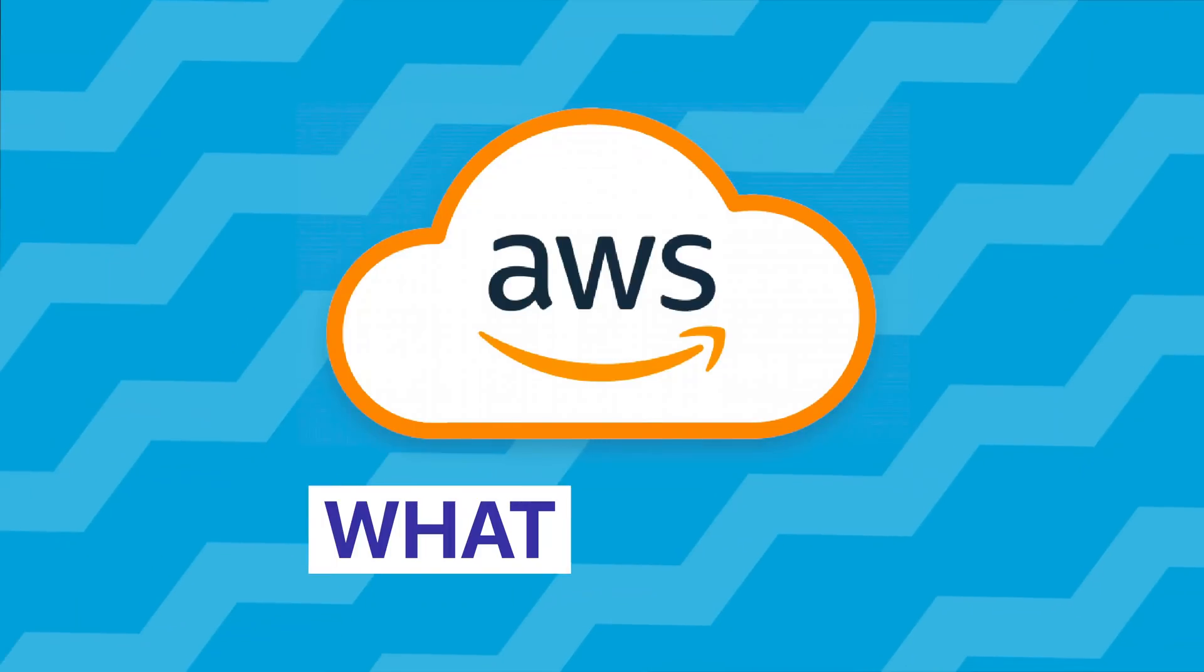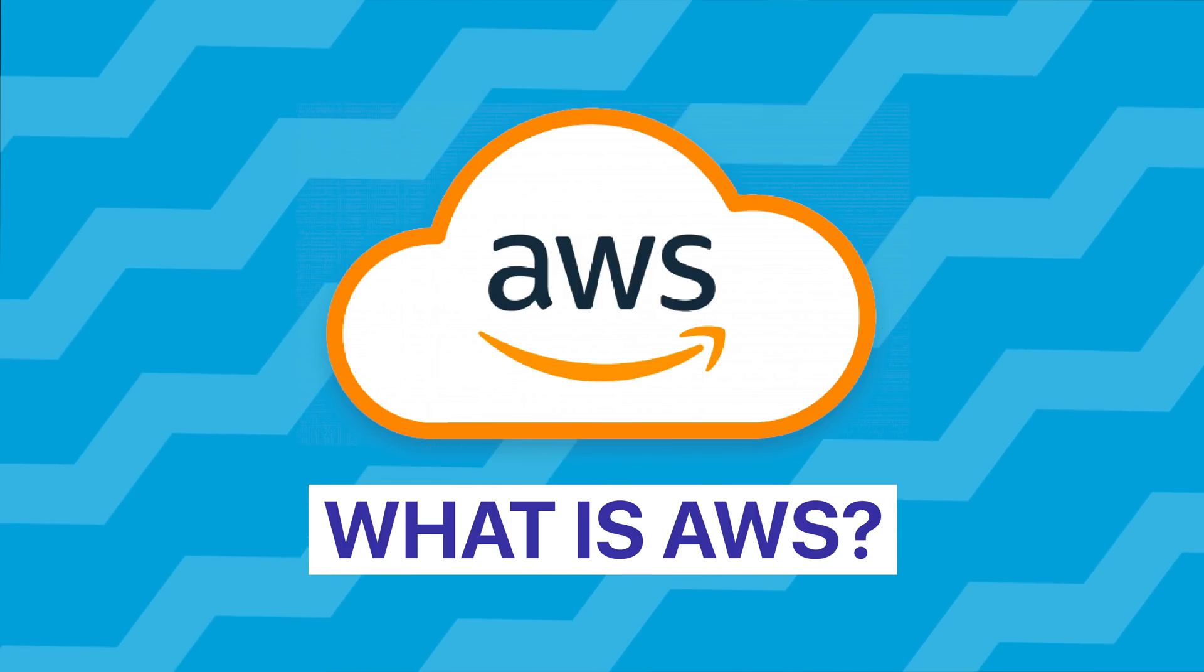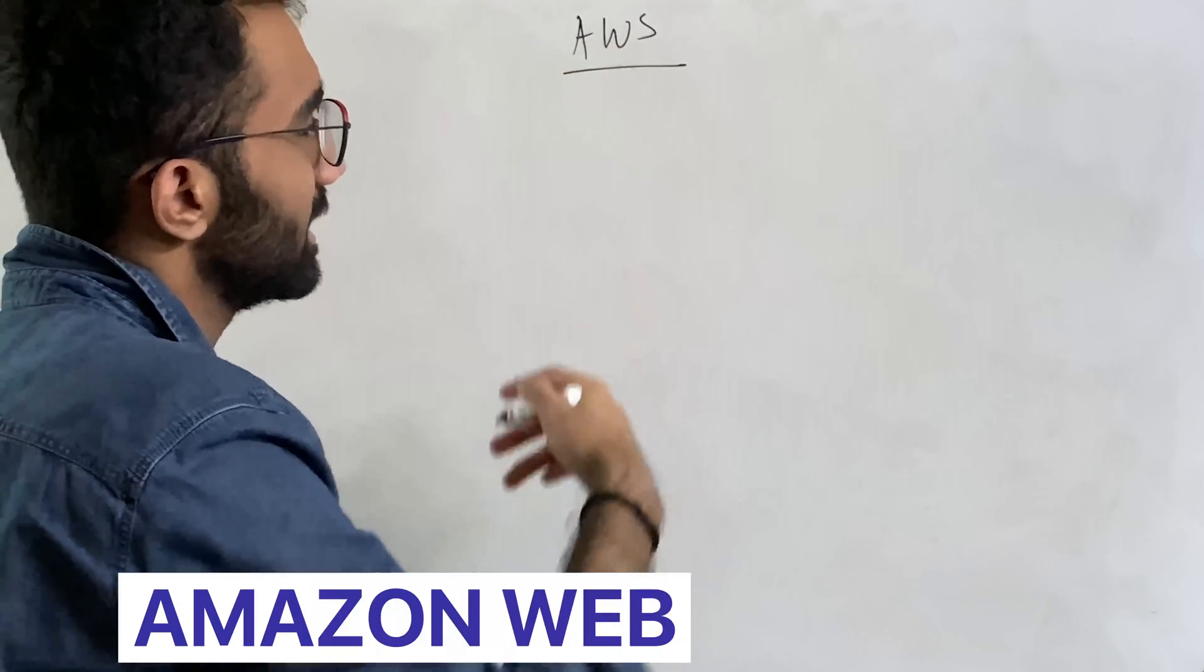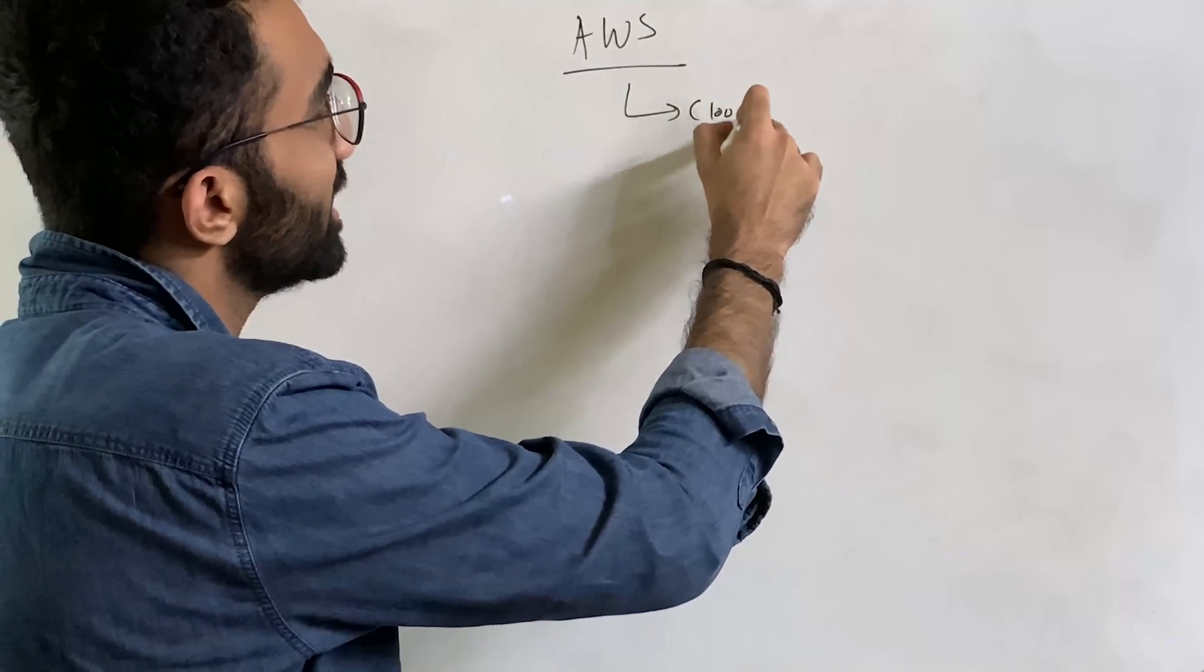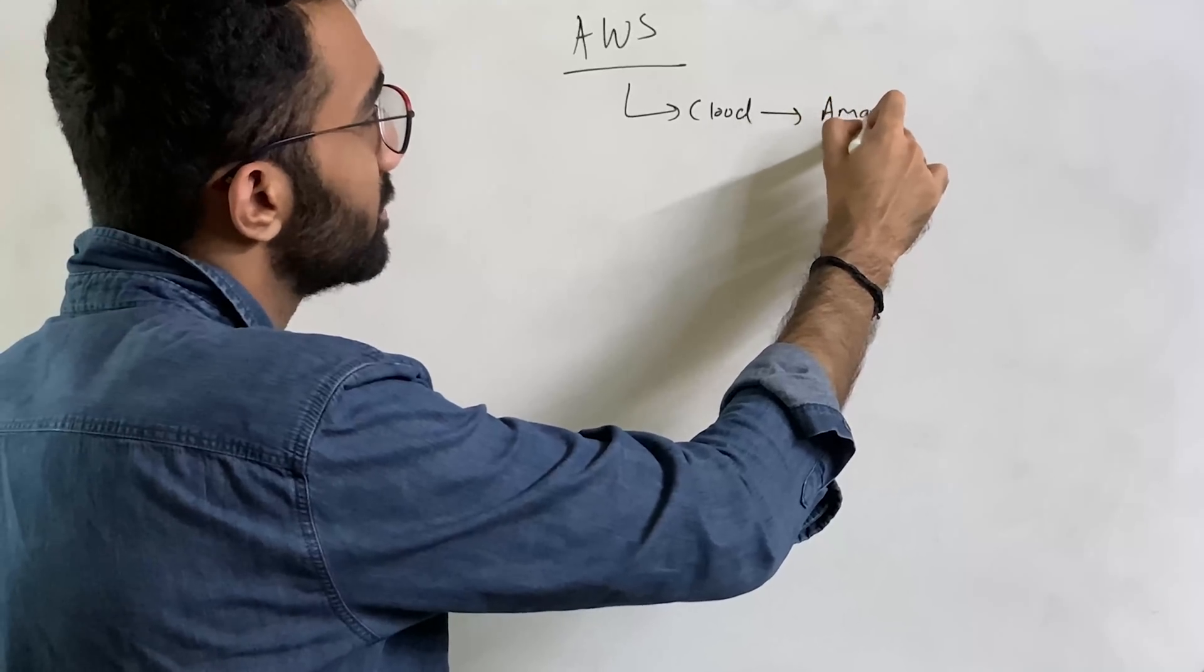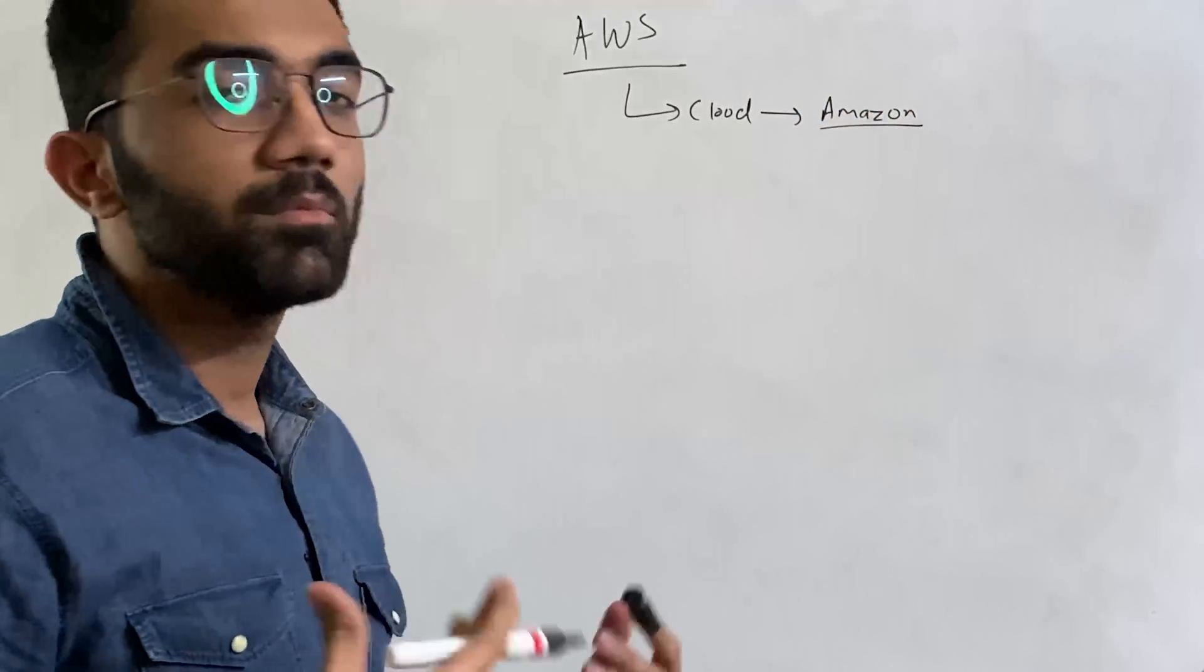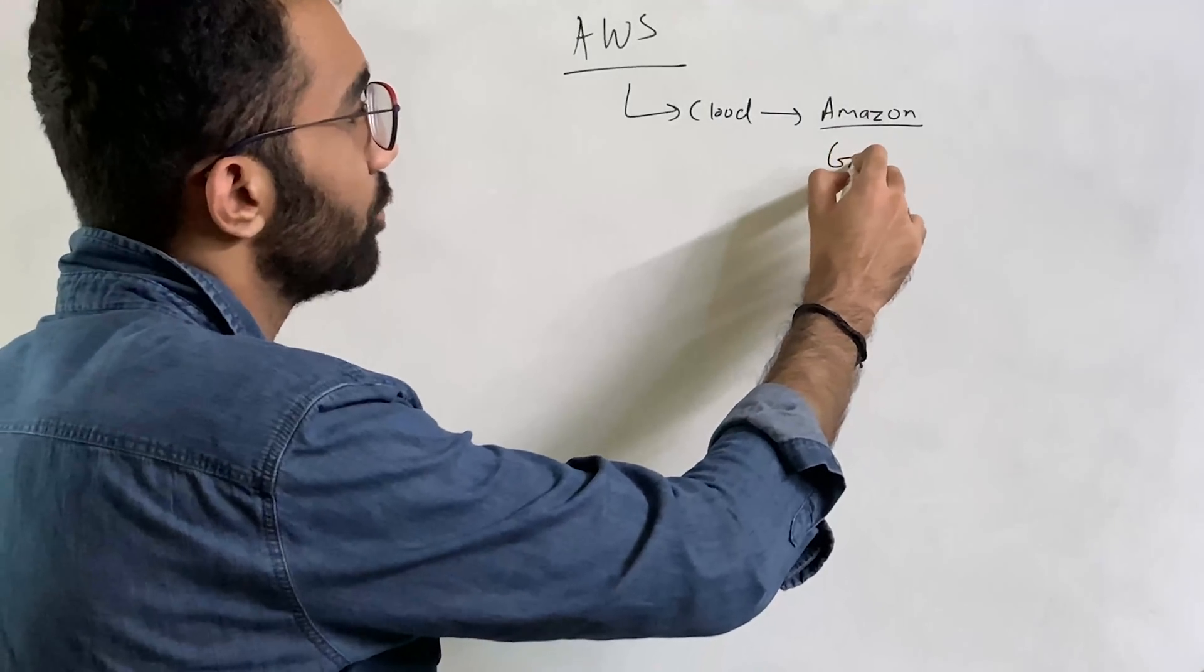Before we actually discuss what AWS and how you can learn AWS, let's actually look at what exactly AWS is. So AWS stands for Amazon Web Services and this is a cloud provider which is by Amazon but this video and these concepts pretty much would apply on any other cloud provider as well which is at a scale like Amazon.